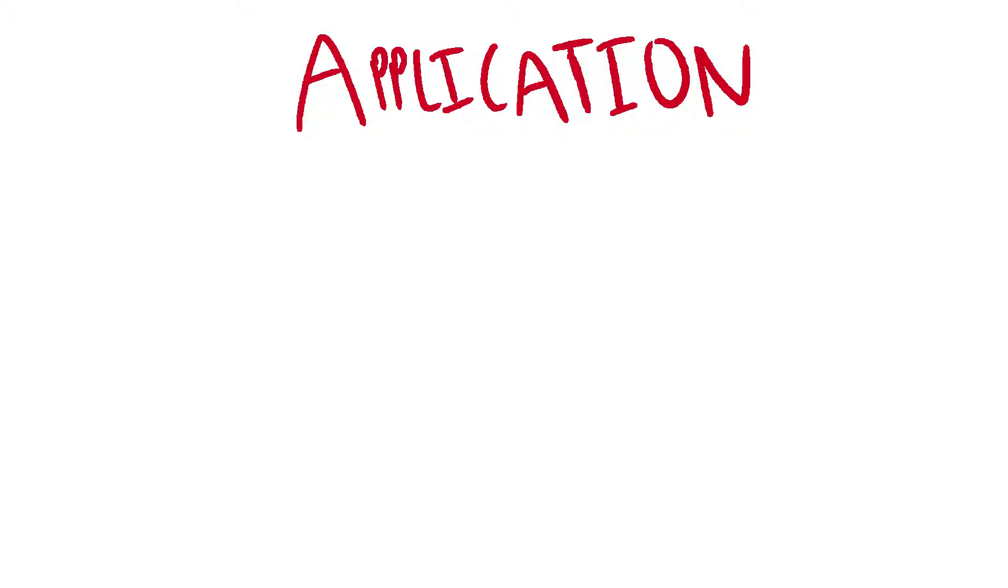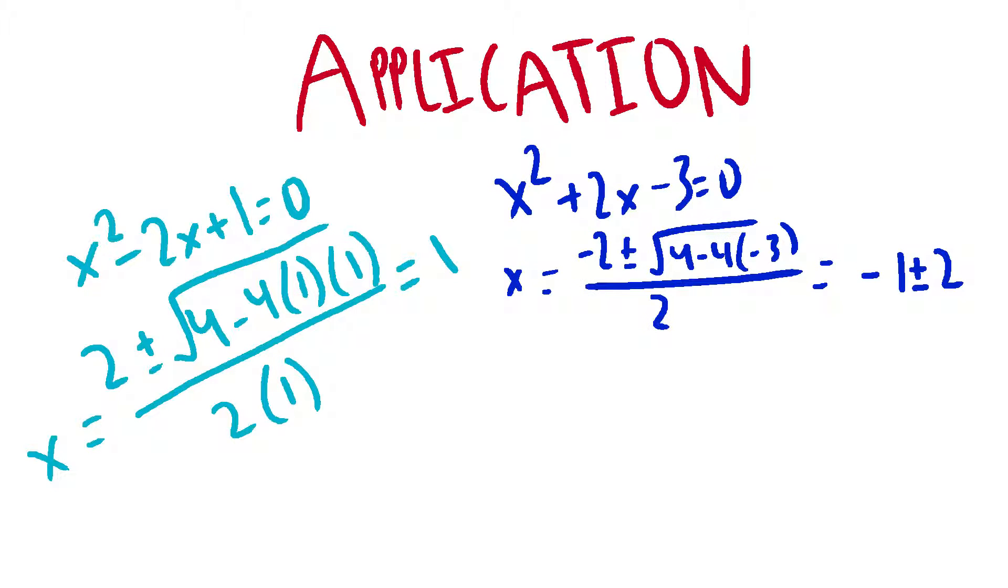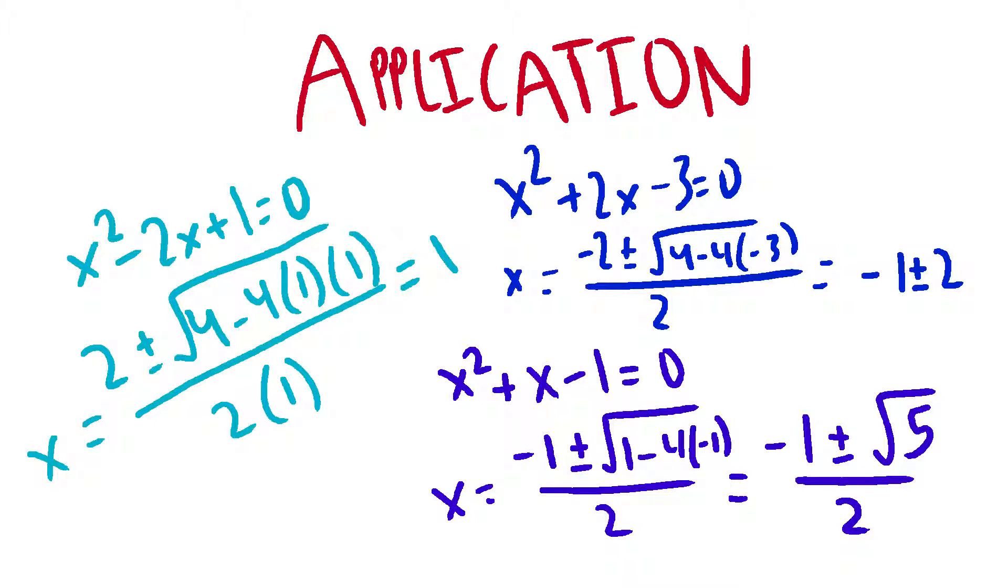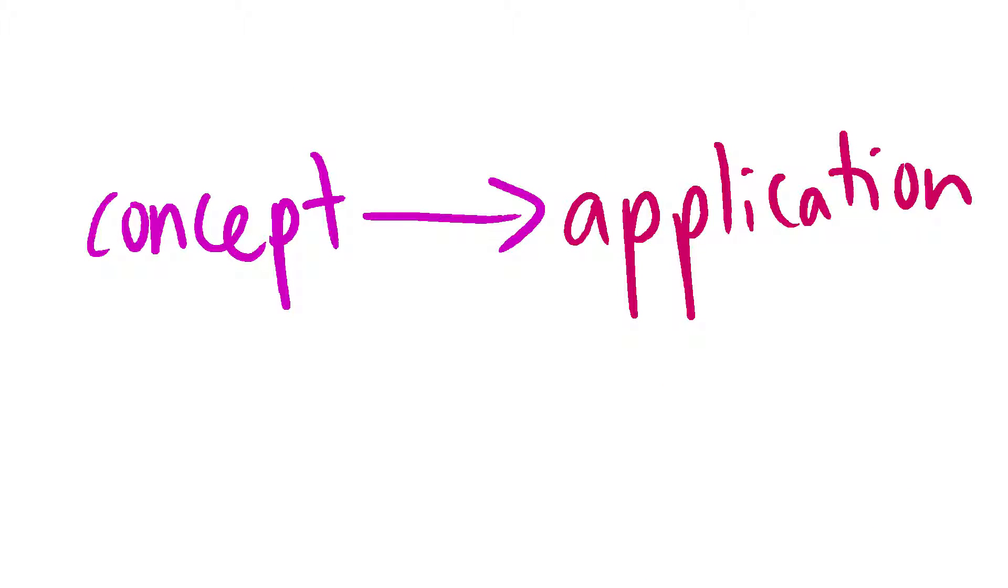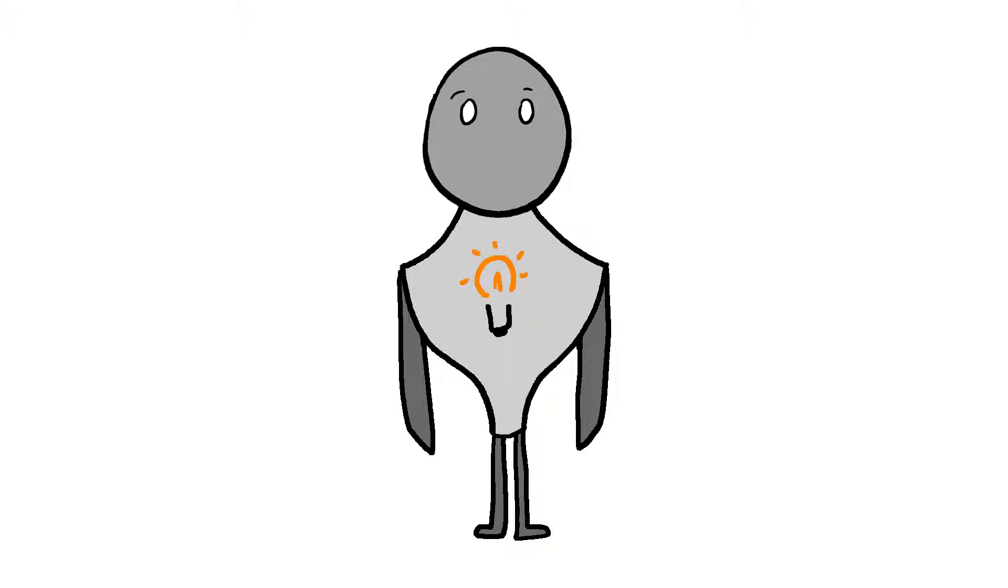The second type of connections are application connections. If we repeatedly use a concept to answer questions or solve problems, we associate the concept with a certain application, and simply the act of using it over and over again cements it in our brains. In some scenarios, this works perfectly.